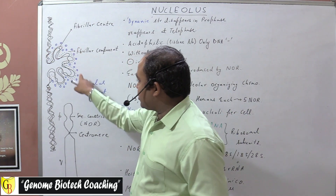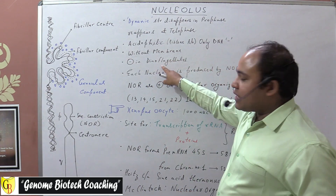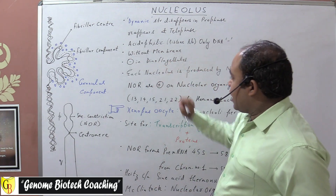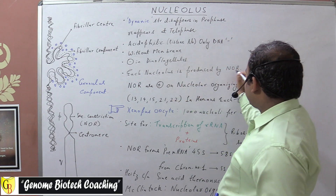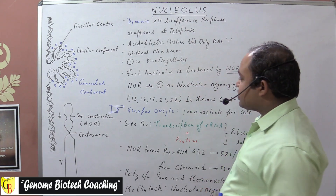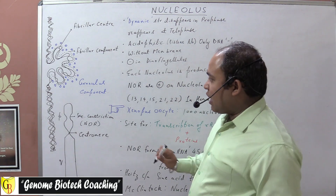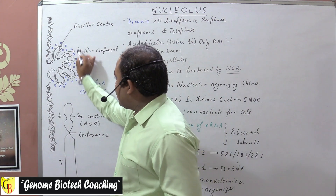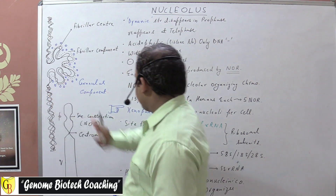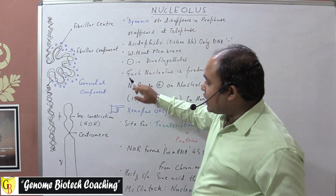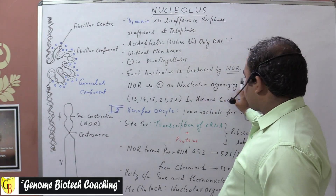There is no membrane bound around it. It is absent in the case of dinoflagellates. Each nucleolus is produced by a specialized structure referred to as the nuclear organizing region. This nucleolus is being produced by a nuclear organizing region, and these nuclear organizing regions are present on nuclear organizing chromosomes.